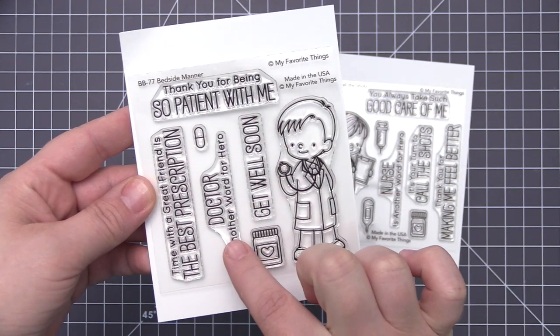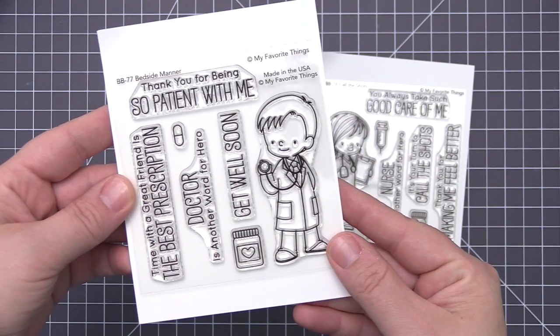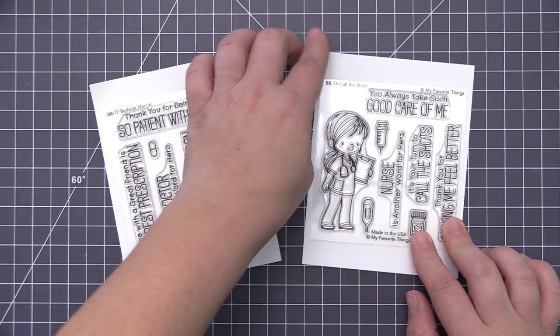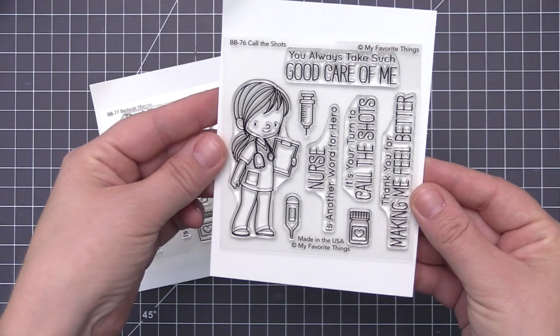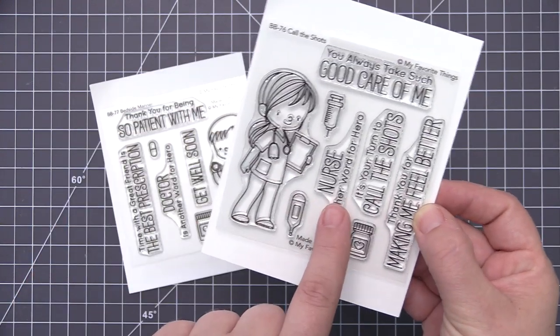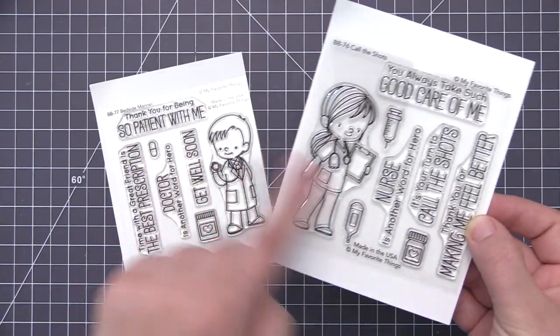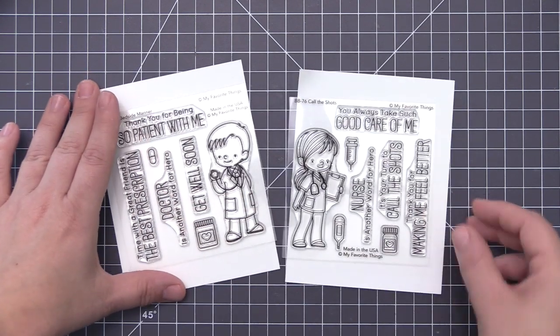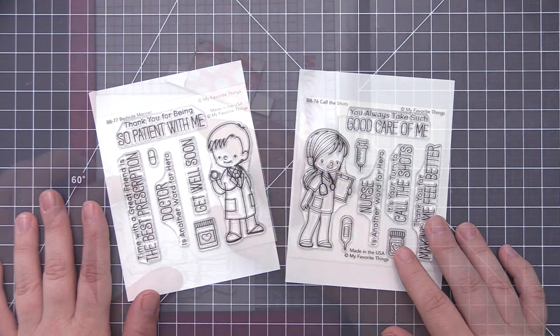What I love about these two stamp sets is that they're interchangeable. Even though this one appears to be the doctor set with the boy doctor and the other set is the nurse set with the girl nurse, you can mix and match these and actually use the girl as the doctor or the boy image as the nurse. It doesn't have to be a girl nurse or a boy doctor—you can use them however you want and mix and match all of the sentiments.